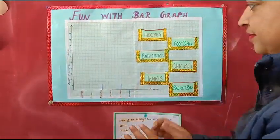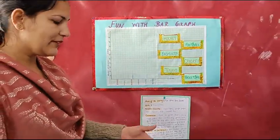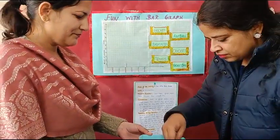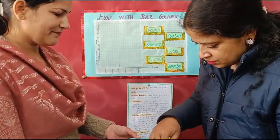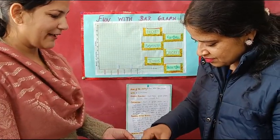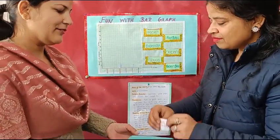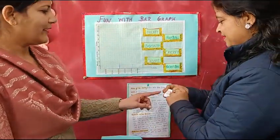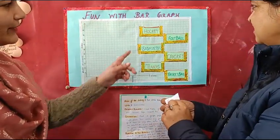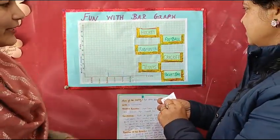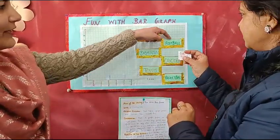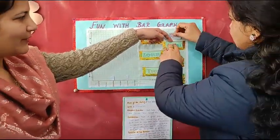Along with that, you can also choose one picture from this box. Any one picture? Here it is written: goalkeeper. So goalkeeper will go in which game? Football. Then keep it in this pocket.